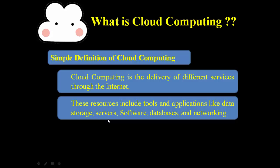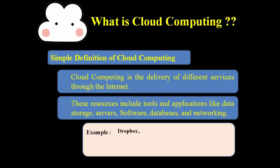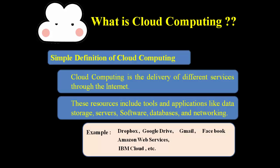Instead of making your own server, you can take a server from the cloud. We can directly use different software from the cloud — for example, instead of purchasing a license for Photoshop and installing it on your personal computer, you can directly use Photoshop from the cloud without installation. Similarly, databases, networking, and other services you can take directly from the cloud. Examples of cloud include Dropbox, Google Drive, Gmail, Facebook, Amazon Web Services, IBM Cloud, etc.